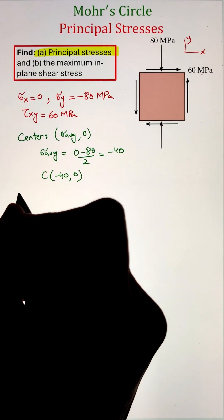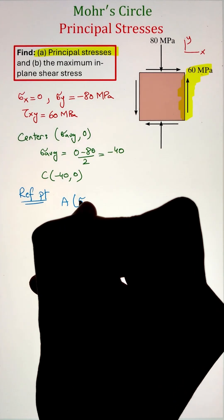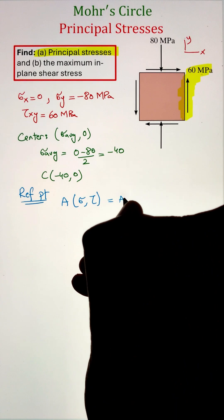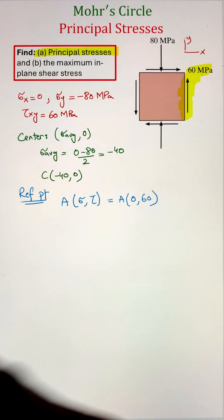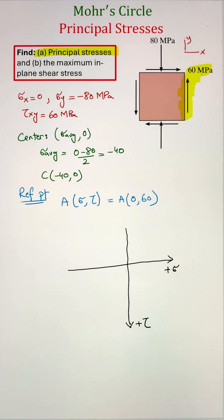Once we have these stresses, we can draw our Mohr's circle on the axis of normal and shear stresses. To start, we can first identify the center of the circle with the point coordinates of sigma average comma 0. In this case, the average stress is negative 40 megapascal.